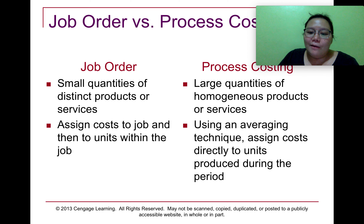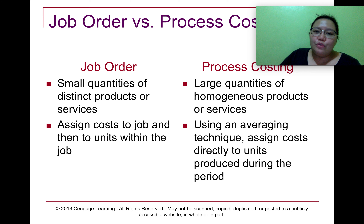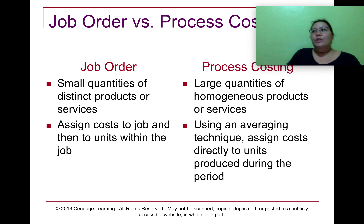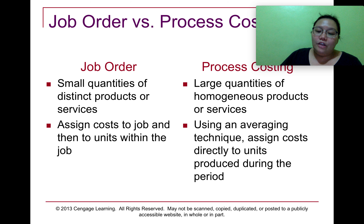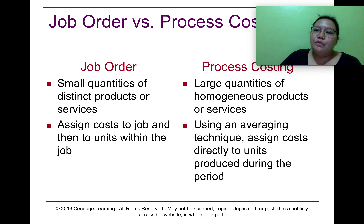A perfect example of this is pancit canton or noodles. Whenever Lucky Me or Nissin manufacture these noodles, all the raw materials are the same, especially for the noodle itself. If you produce the original flavor, you include a different flavor packet inside a yellow pack. If you produce the chili mansi, you include another flavor packet and place it inside a different packaging. So if there is customization, it's very little.